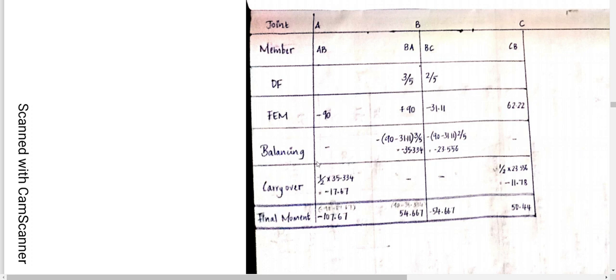Adding all FEM values: for AB it is minus 90 plus 0 minus 17.67. For BA it is plus 90 minus 35.334 plus 0, equal to 54.667. For BC: minus 31.11 minus 23.556 plus 0 equals minus 54.667. For CB: 62.22 plus 0 minus 11.78 equals plus 50.44. The values at the joint should match with opposite signs.